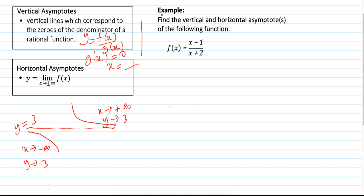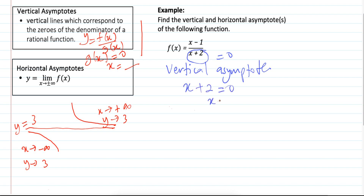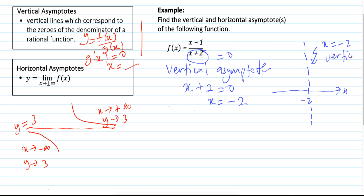To find the vertical and horizontal asymptotes of the following function. First, we look at the vertical asymptote. We set the denominator equal to 0. So, x plus 2 is equal to 0, which gives x equal to minus 2. So, x equal to minus 2 is a vertical asymptote — a straight line at minus 2, like this.